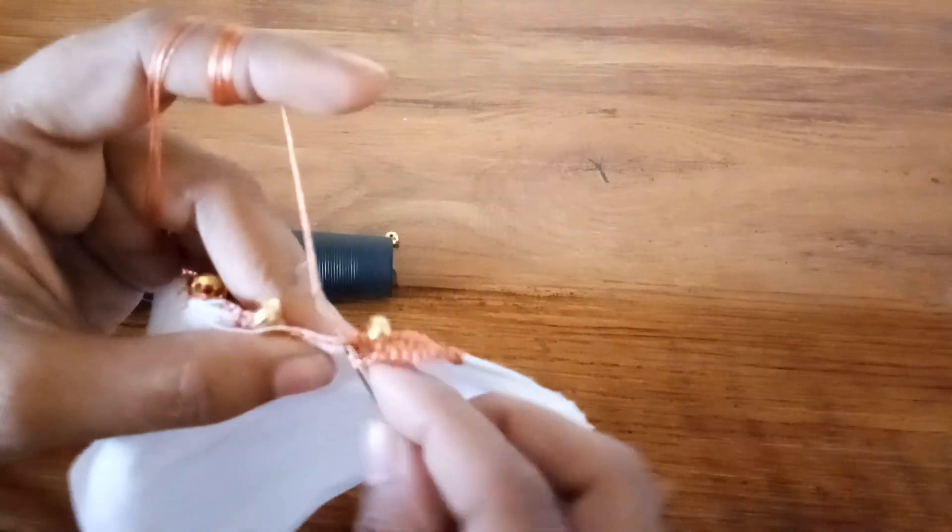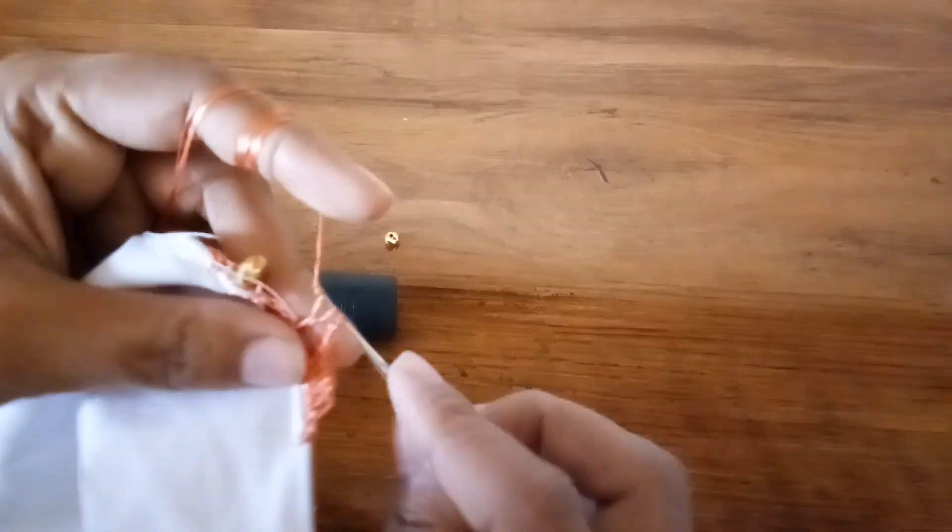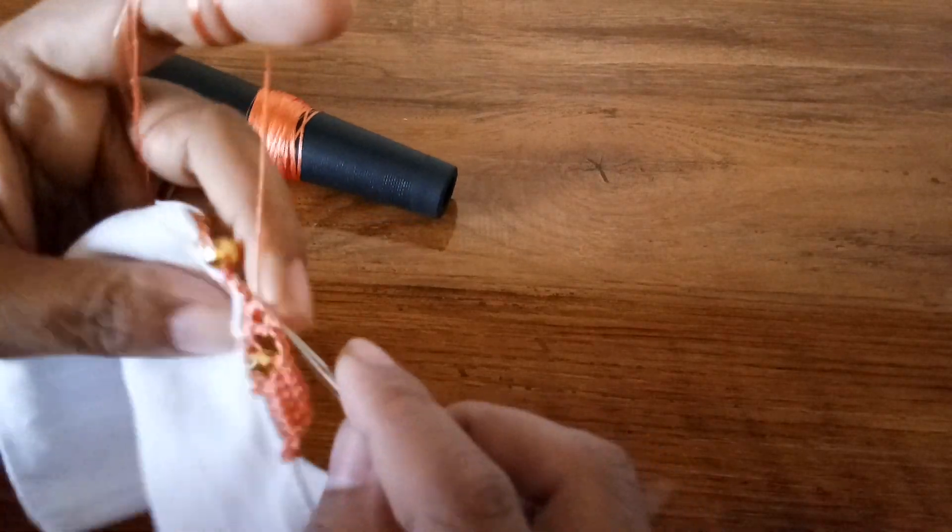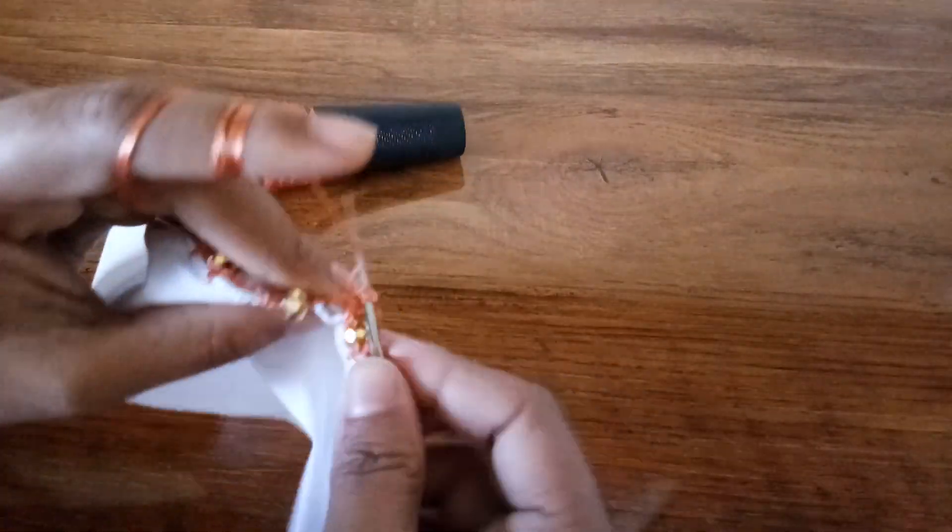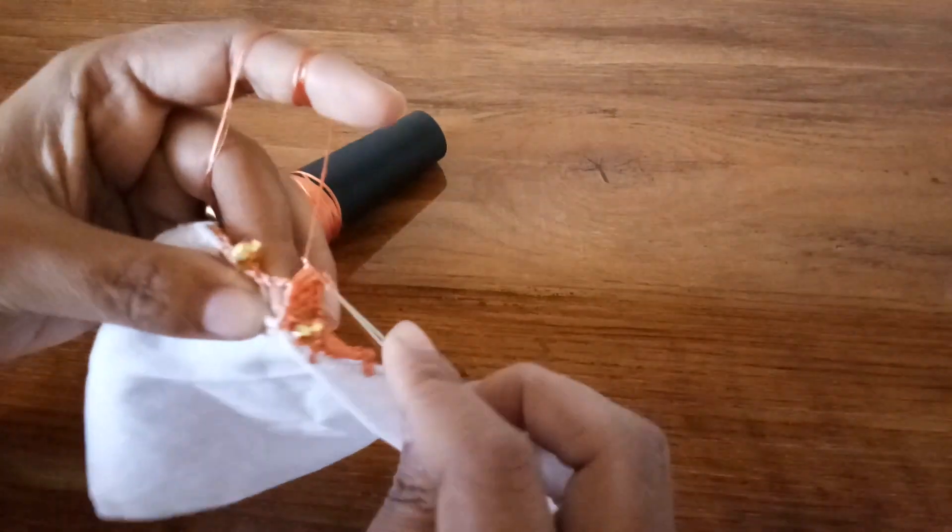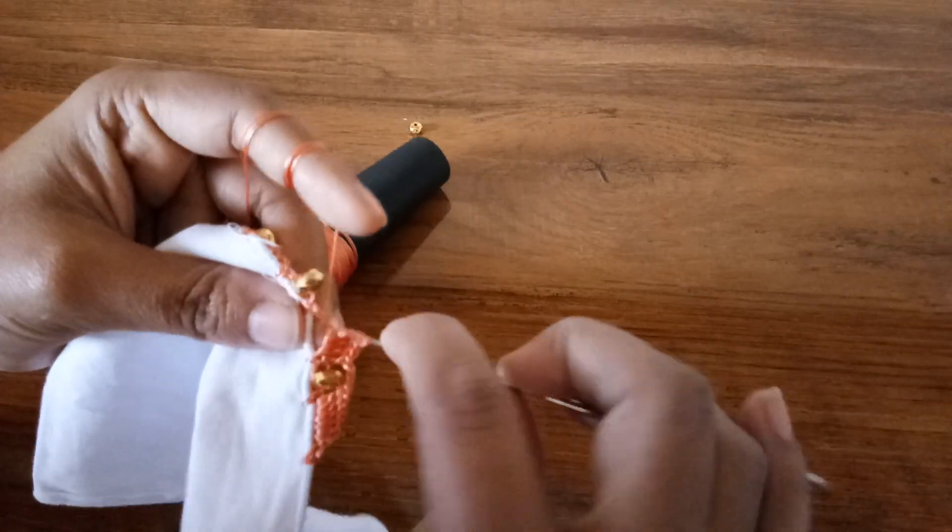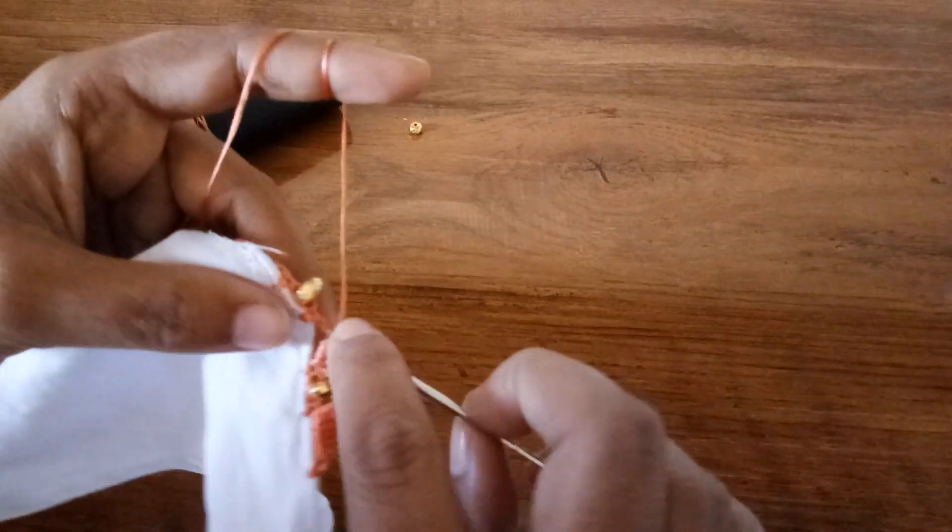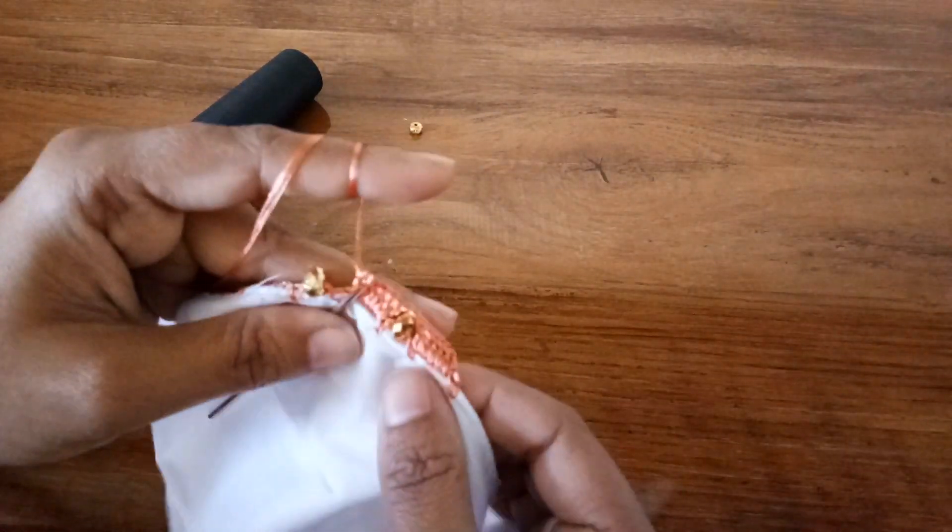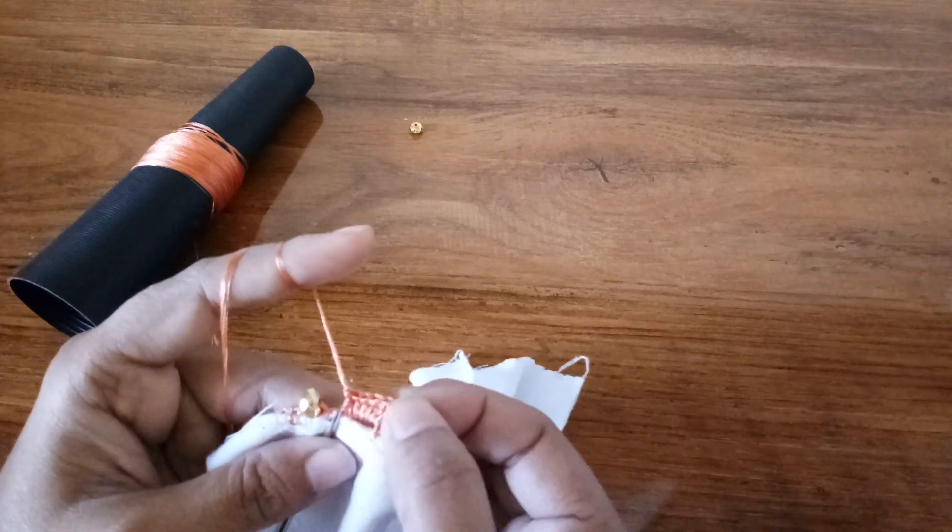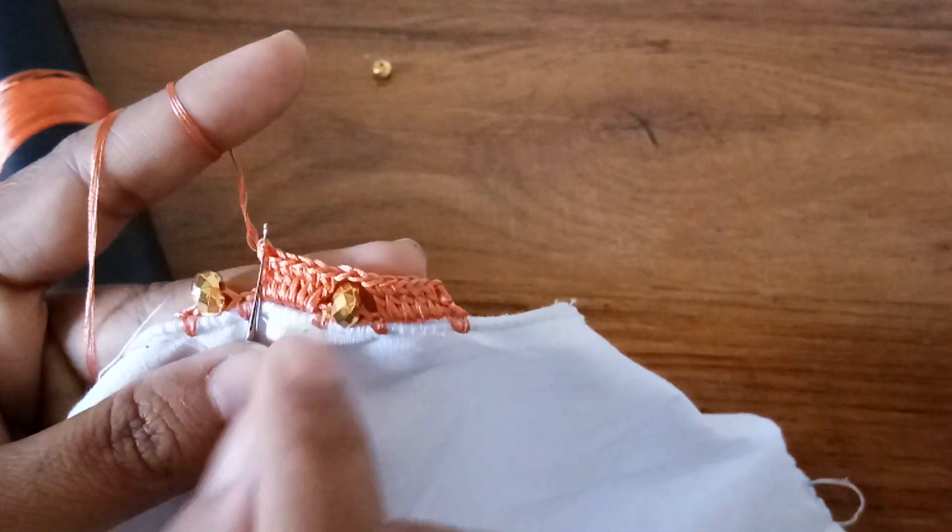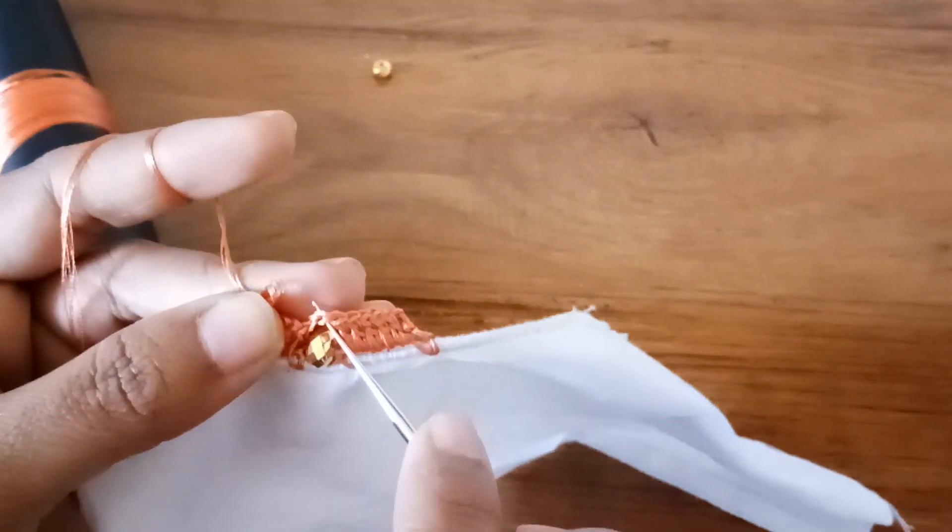Now go to the four chain gap here and make six double crochets. On top of the bead we have a space. In this space we are going to add the kucho.